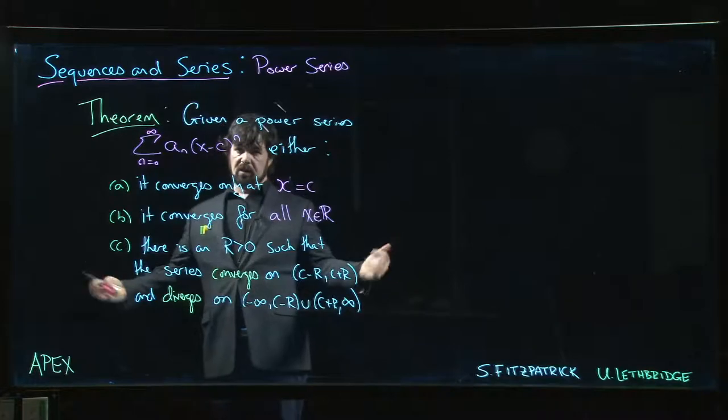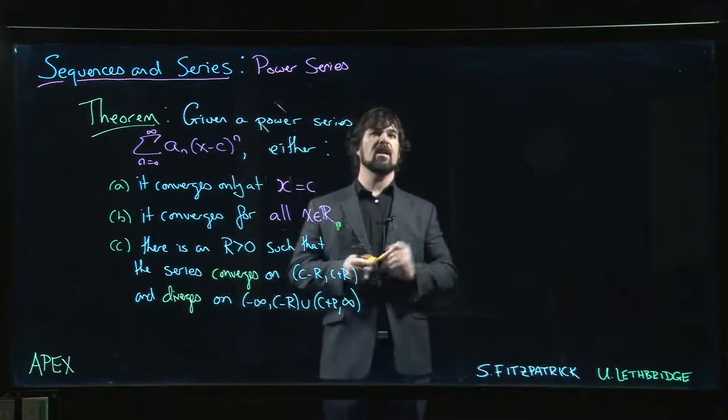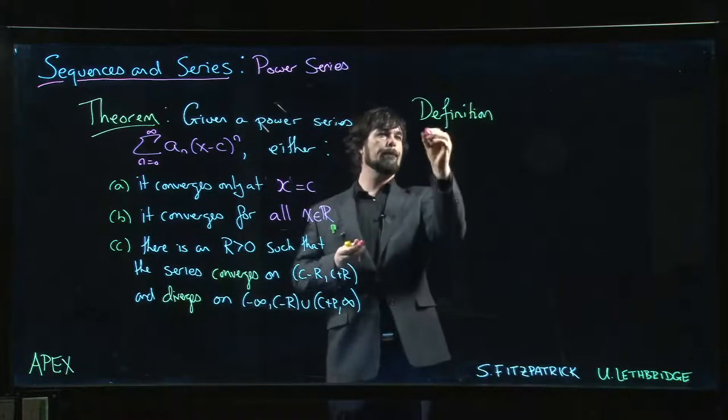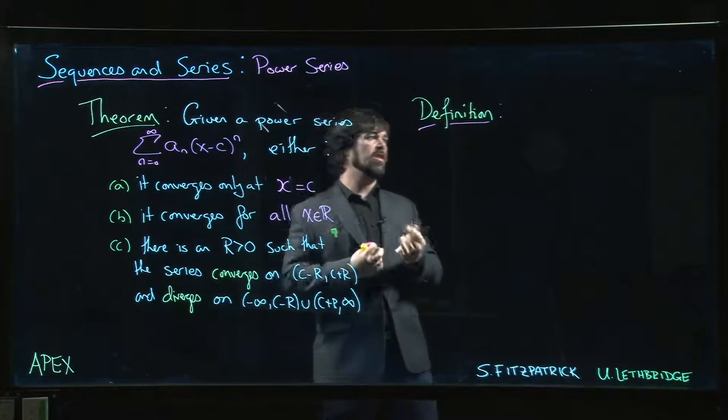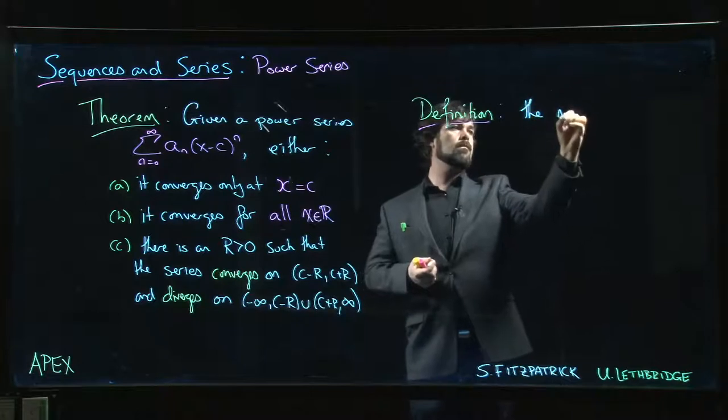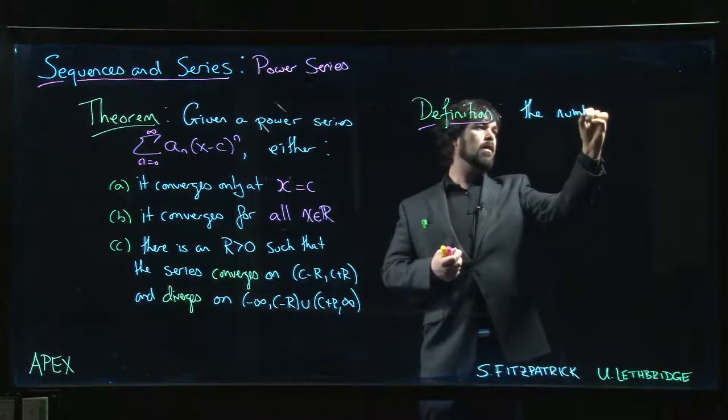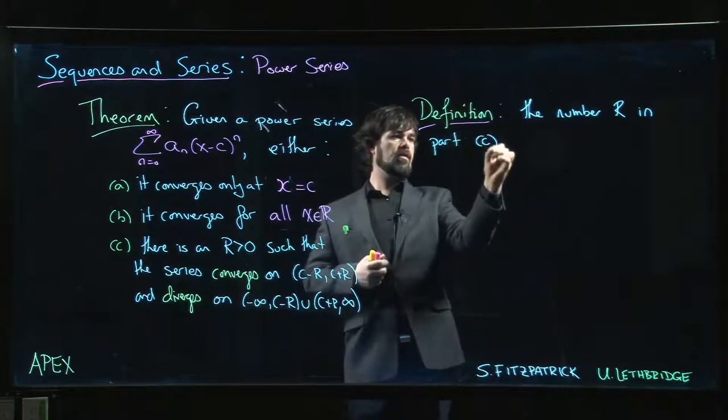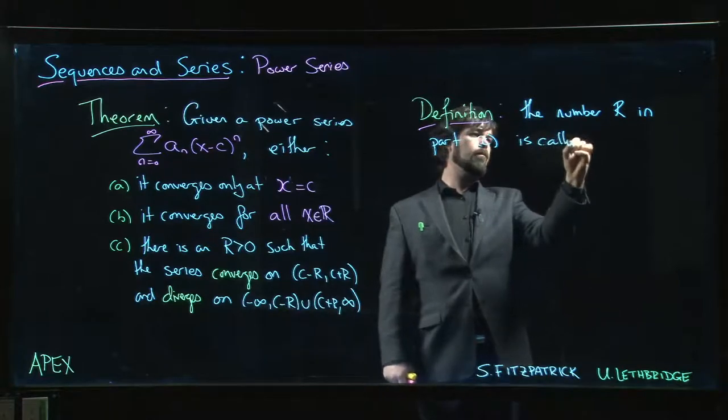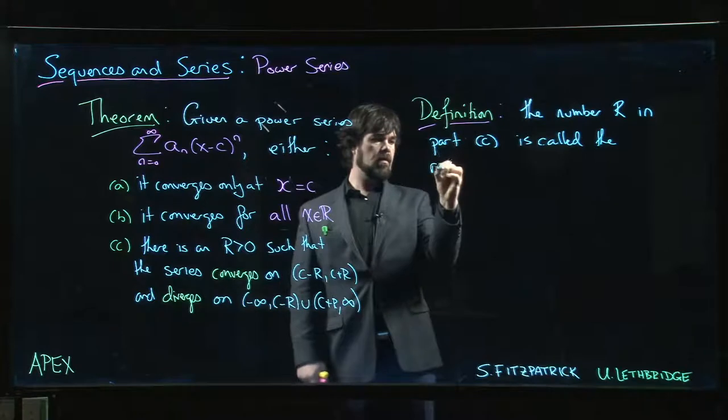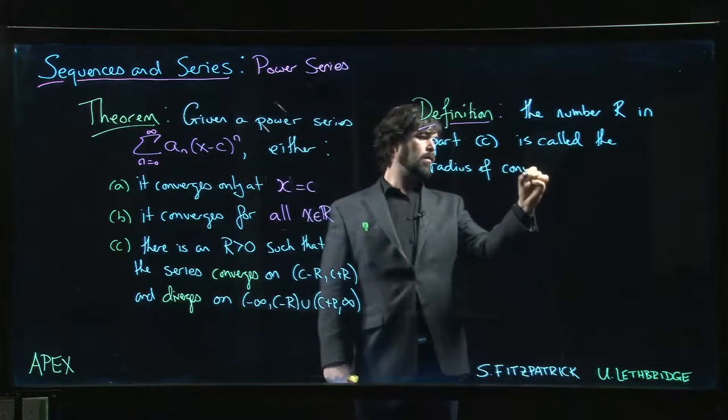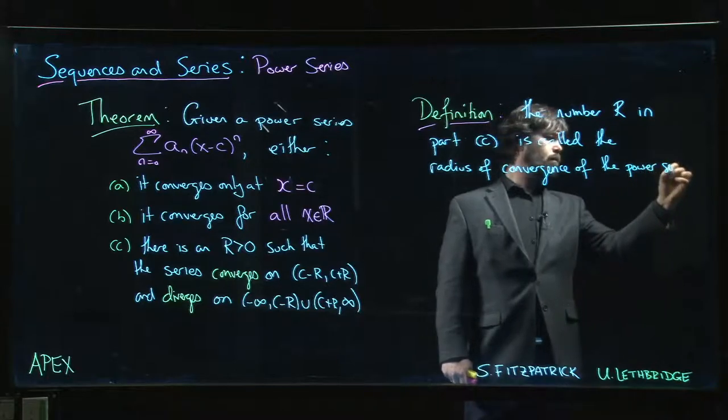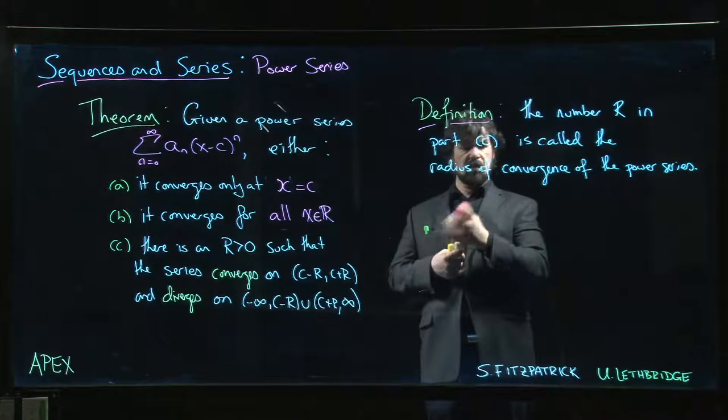So this theorem... let's just make a definition. Our definition is this: the number R in part C of our theorem here is called the radius of convergence of the power series.